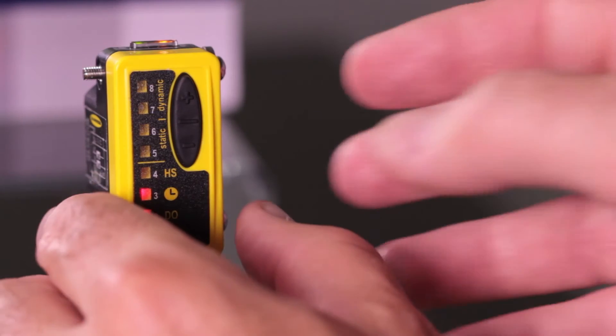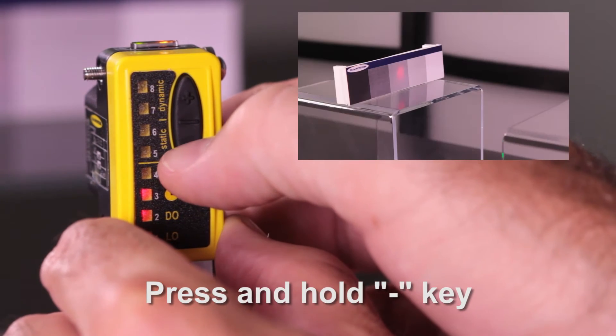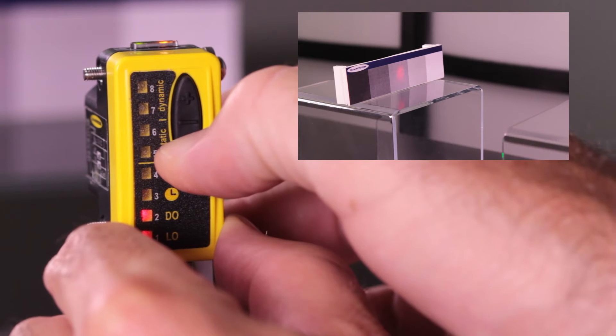Start off by aligning the sensor with the target, then press and hold the minus button until the number 5 and 6 LED flash.